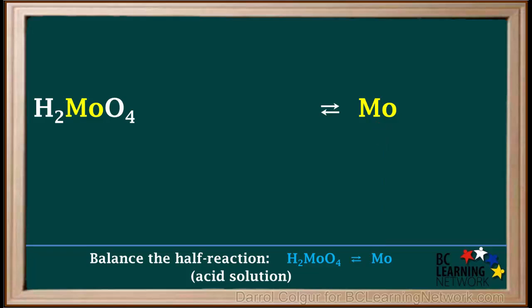We always start by balancing atoms other than oxygen or hydrogen. In this case, it is the element molybdenum, Mo. There is one Mo atom on both sides, so Mo is already balanced.